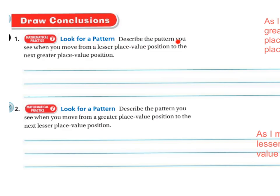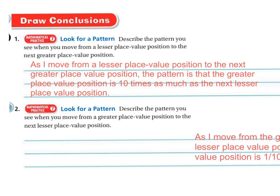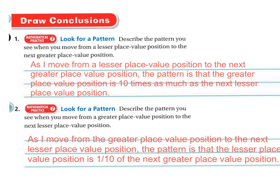Let's look for patterns. Describe the pattern you see when you move from a lesser place value position to the next greater place value position. As you move from a lesser to the next greater place value position, the pattern is that the greater place value position is 10 times as much as the lesser place value position. Now describe the pattern when you move from a greater place value position to the next lesser: the lesser place value position is 1 tenth of the next greater place value position.